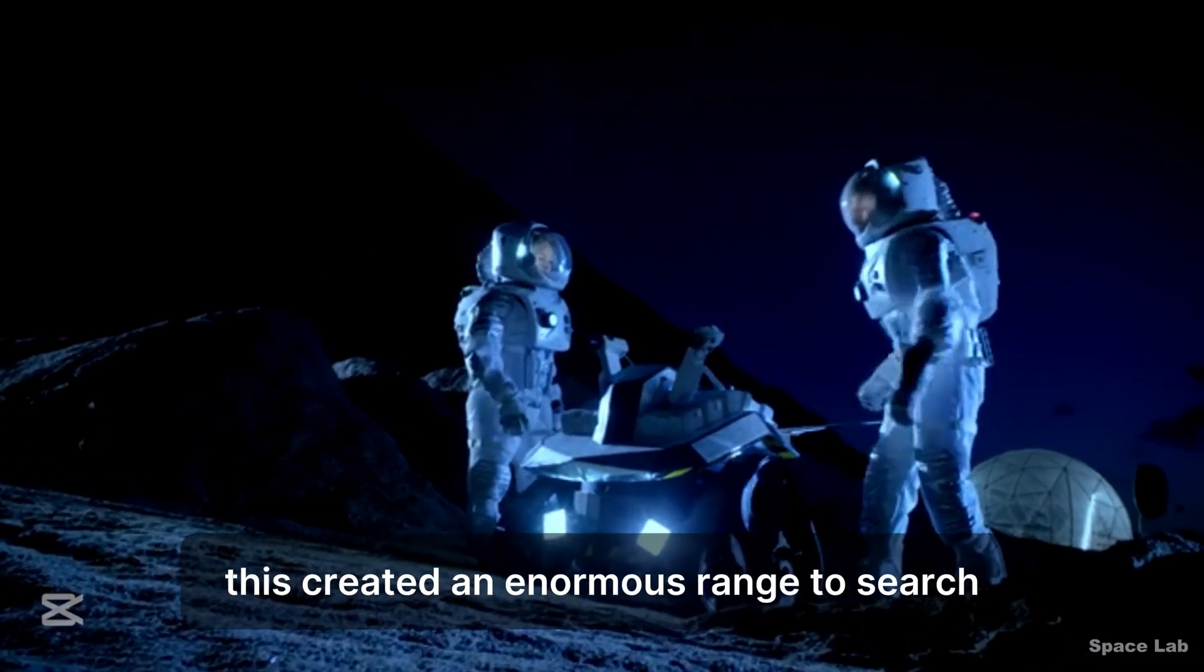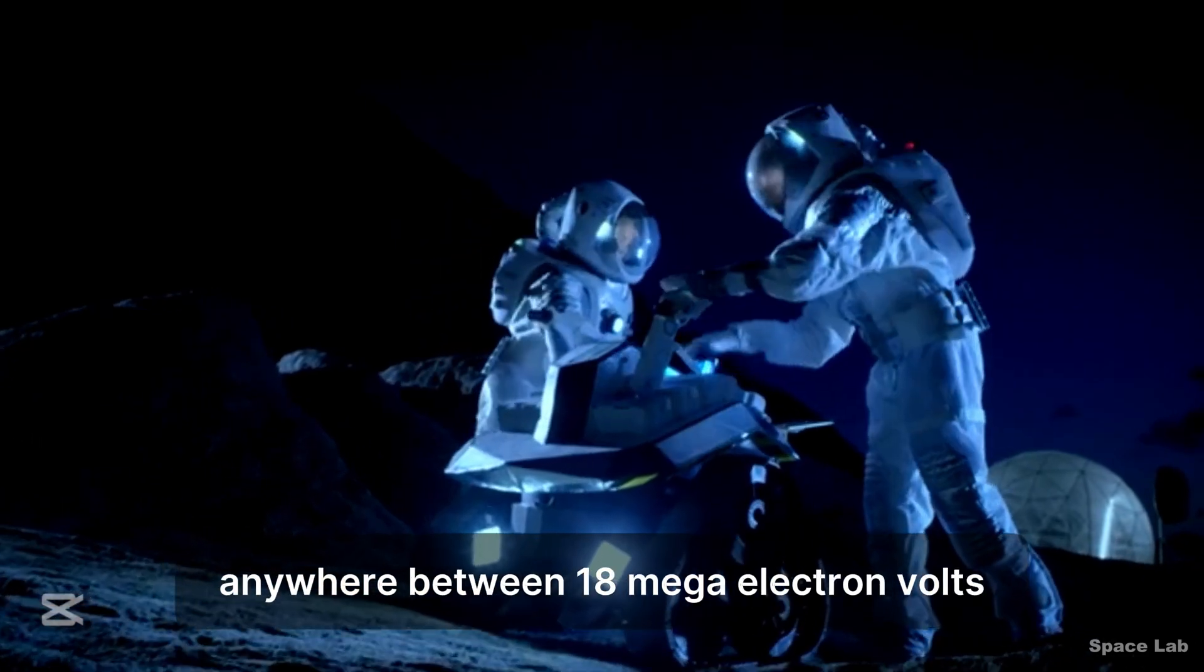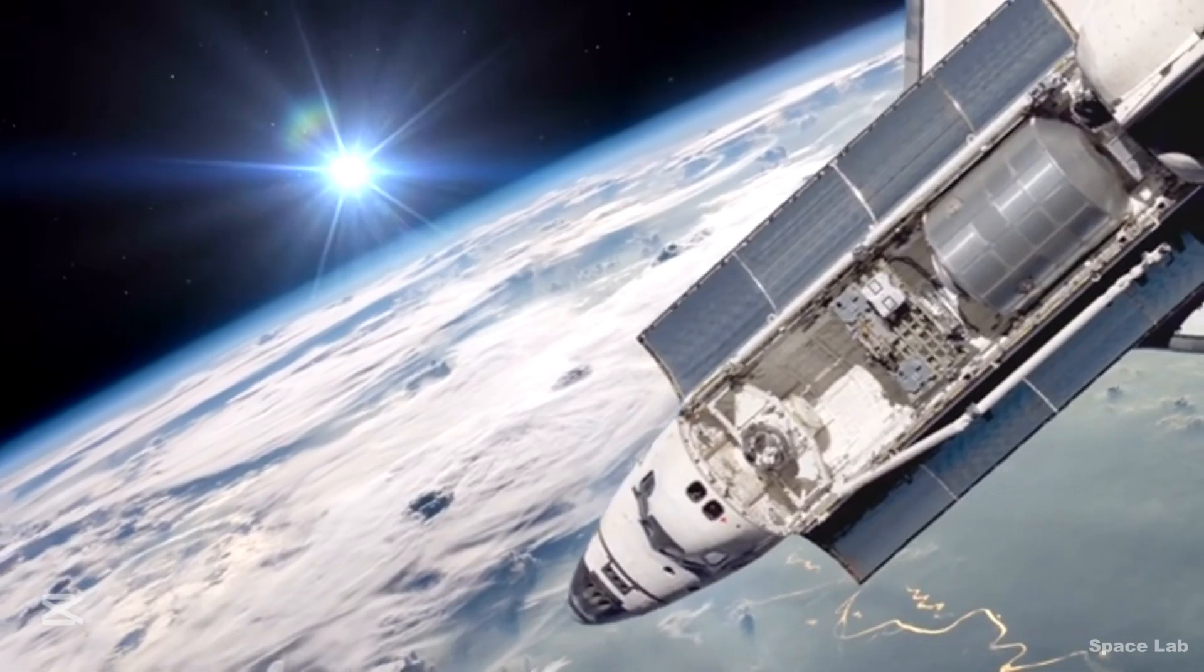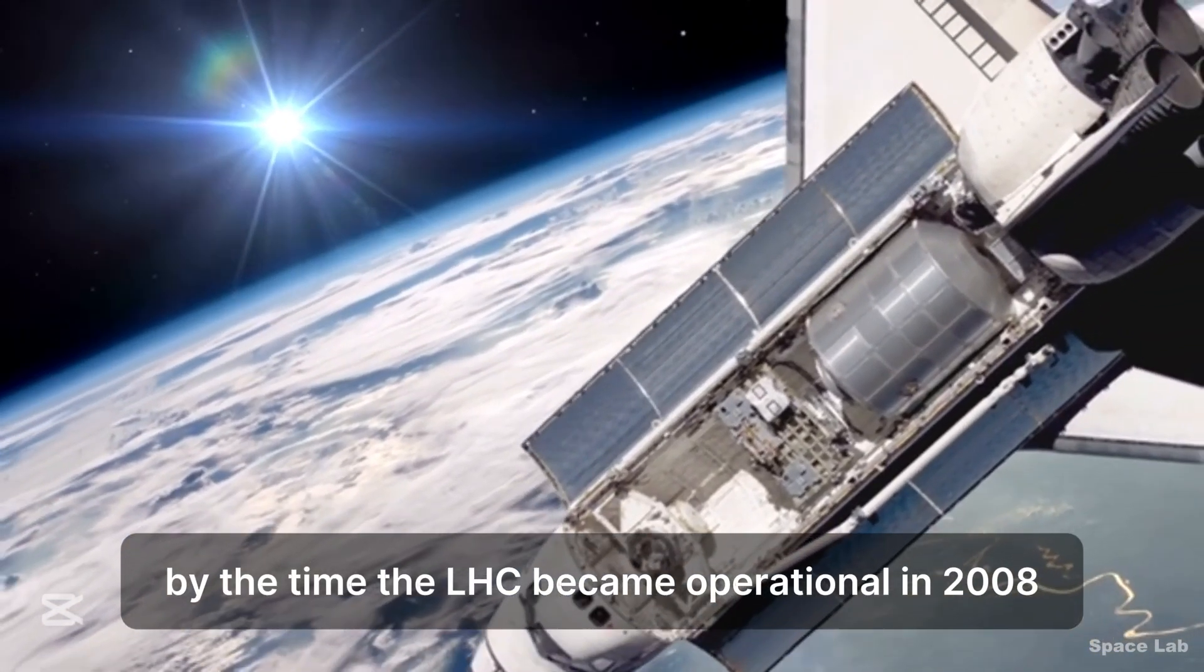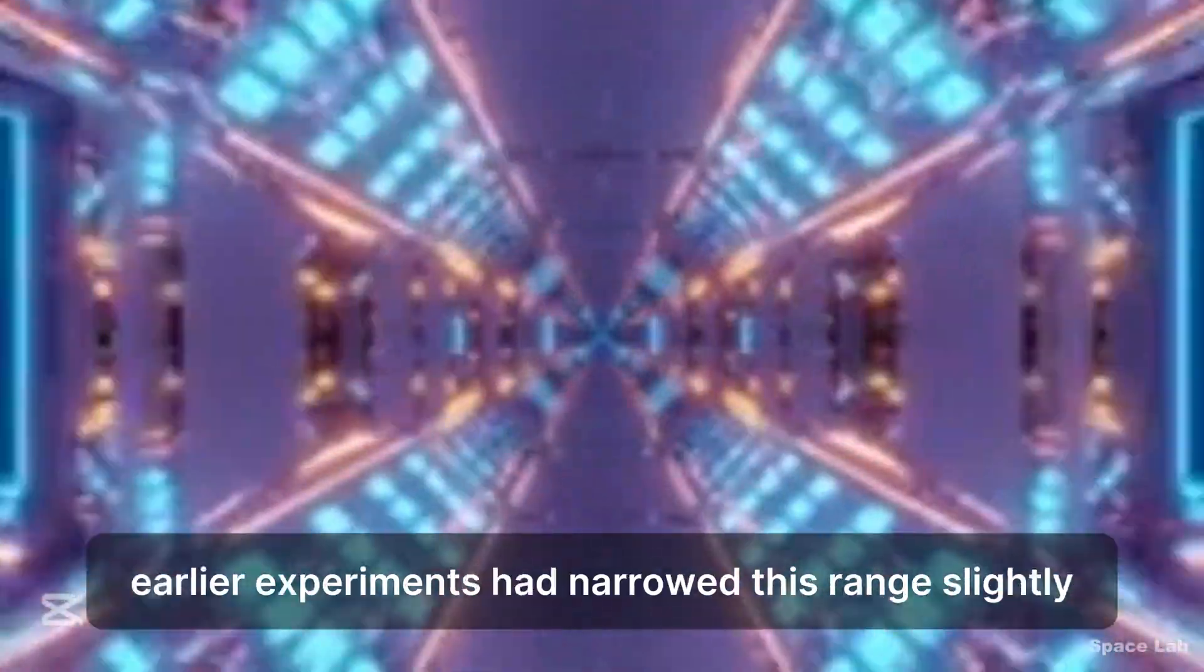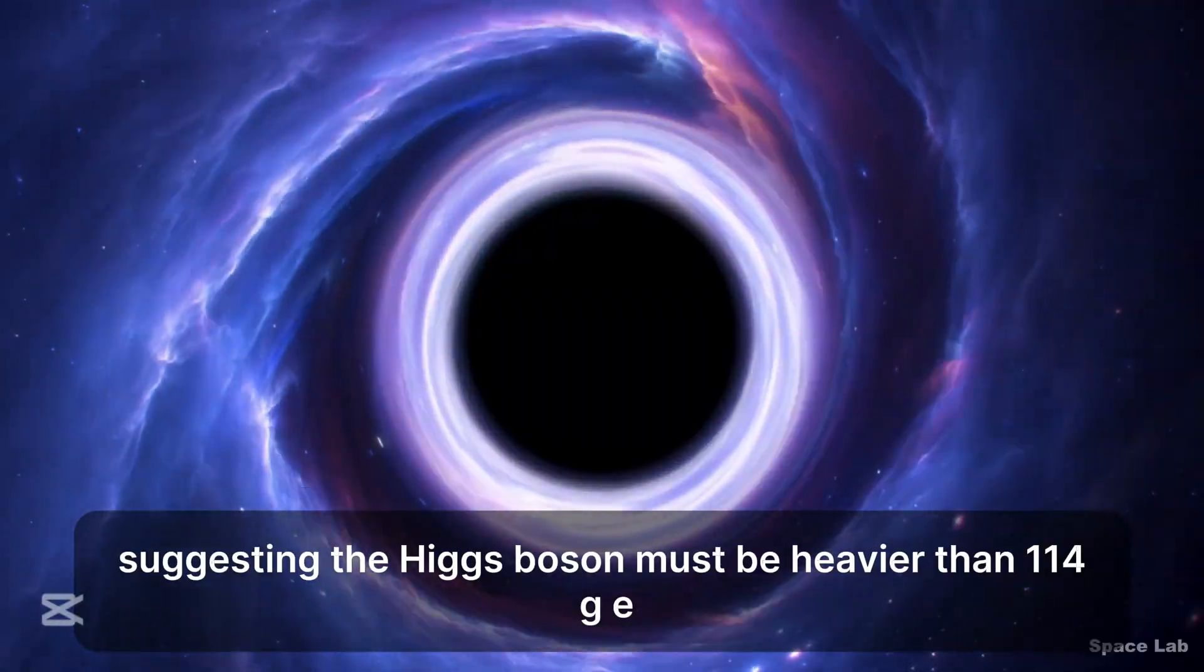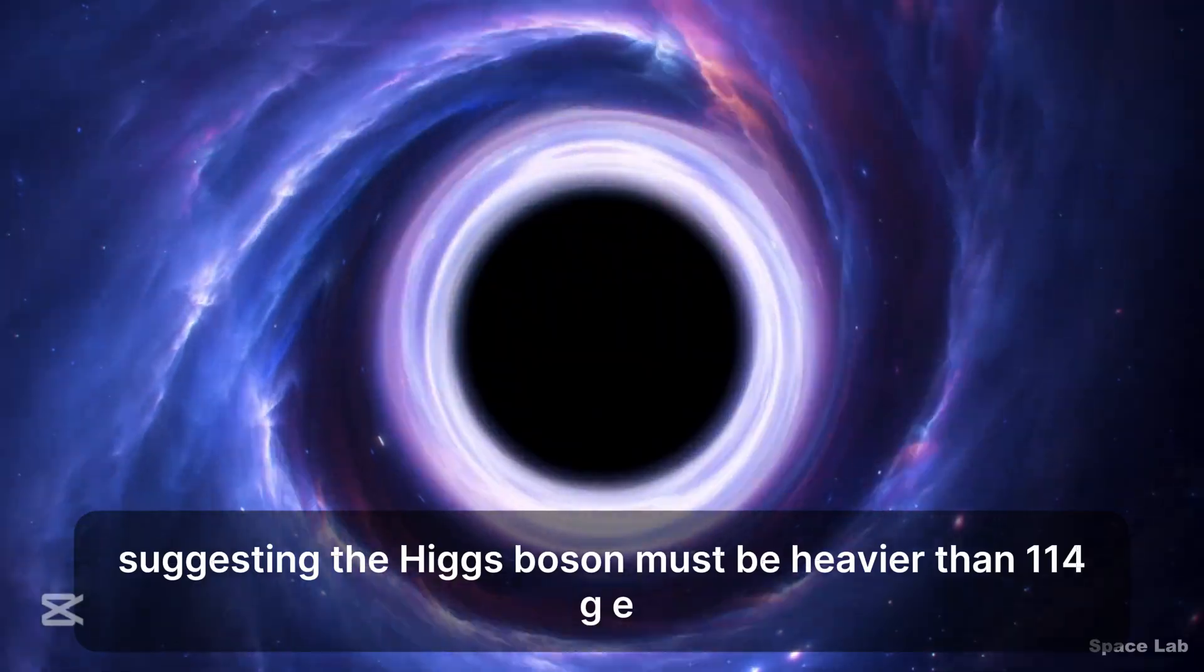This created an enormous range to search, anywhere between 18 megaelectronvolts to 800 gigaelectronvolts. By the time the LHC became operational in 2008, earlier experiments had narrowed this range slightly, suggesting the Higgs boson must be heavier than 114 GeV.